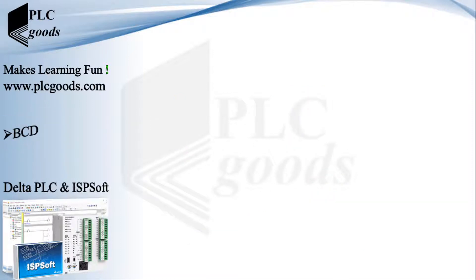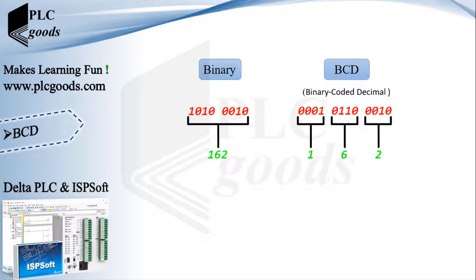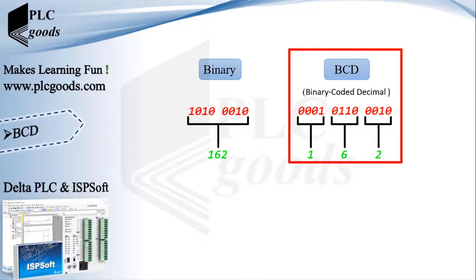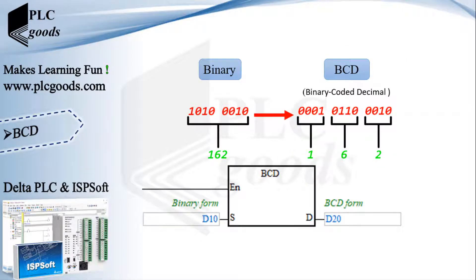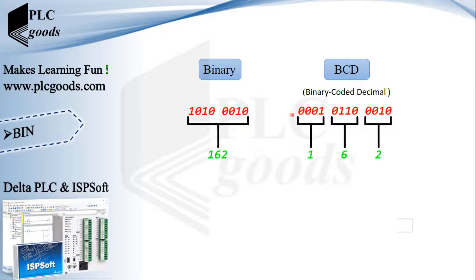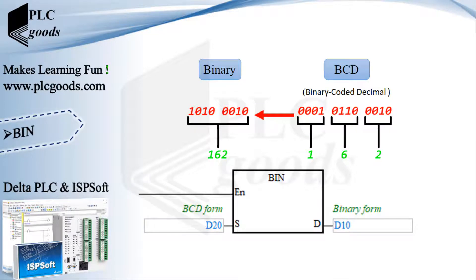Like decimal, binary and hexadecimal formats, another favorite format to store numbers is BCD. It uses four bits to store each digit of a decimal number. We can use the BCD instruction and also the BIN instruction to convert between these formats. Now let's do a practical project with Factory IO software.